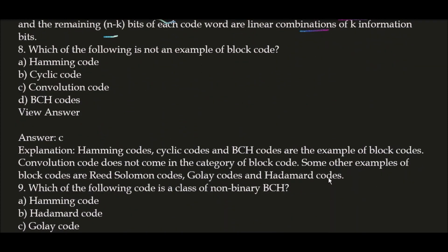Next question: which of the following is NOT an example of a block code? The correct answer is option C — convolutional code. Hamming codes, cyclic codes, and BCH codes are all examples of block codes. Convolutional code does not belong to this category. Other examples of block codes include Reed-Solomon codes and Hadamard codes.